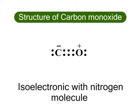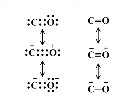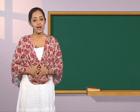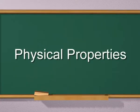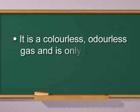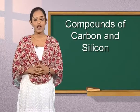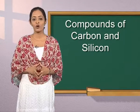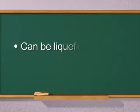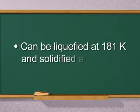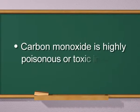Carbon monoxide is isoelectronic with nitrogen molecule and both have 14 electrons. Its electronic configuration is as shown on the screen and it is a hybrid of the contributing structures shown. Carbon monoxide is a colorless, odorless gas and is only slightly soluble in water — 100 volumes of water dissolves 3 volumes of carbon monoxide at 273 Kelvin. It can be liquefied at 181 Kelvin and solidified at 65 Kelvin.